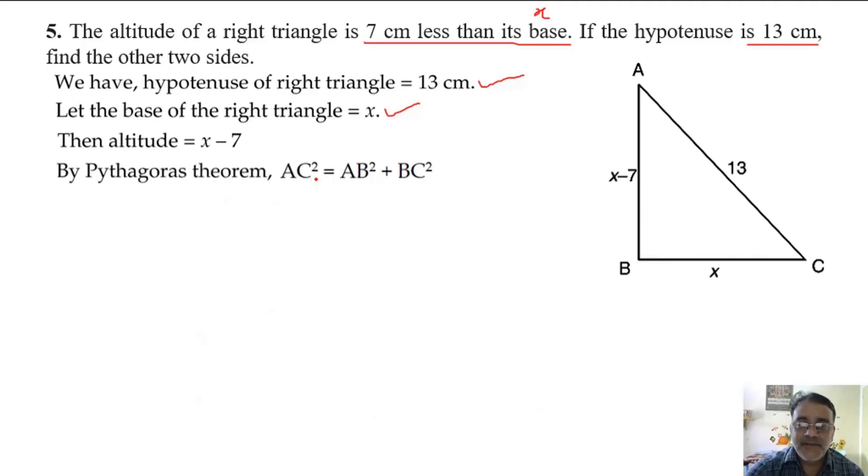By Pythagoras theorem, AC squared equals AB squared plus BC squared. Now we will substitute all the values. AC is 13, this is x minus 7, and this is x.